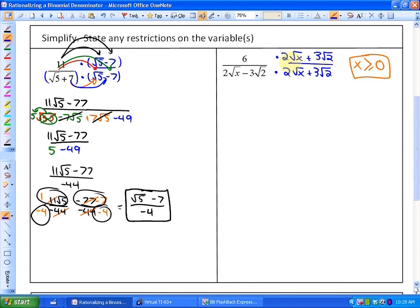If I distribute the numerator, what you're going to see happen is we're going to have 12 root x plus 18 root 2. And that is going to all be over, in this case, if I distribute carefully, 2 times root x is a pair of 2's times the square root of a pair of x's. I find that the easiest way to represent it without making mistakes.